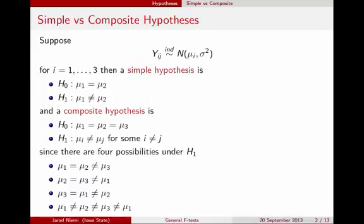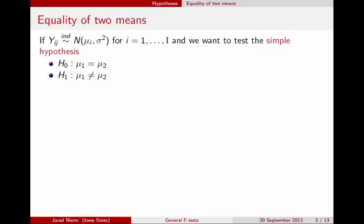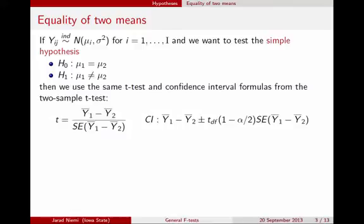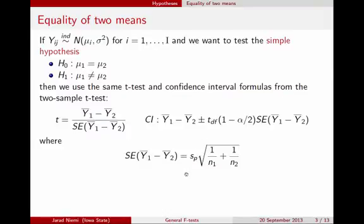We're going to attack these two problems from a hypothesis testing standpoint with two different approaches. For a simple hypothesis — for instance, comparing the equality of two means — remember we're in a scenario with three groups, but the hypothesis is only about the means for groups 1 and 2. We use exactly the same formulas as the two-sample T-test and confidence intervals. What changes is the degrees of freedom and, within the standard error calculation, the way we estimate the pooled standard deviation.